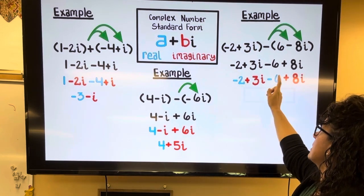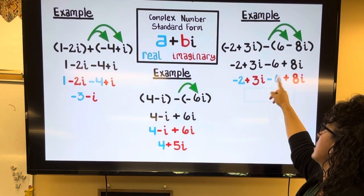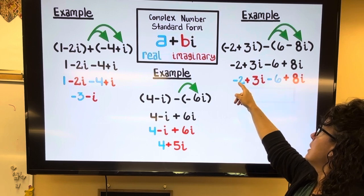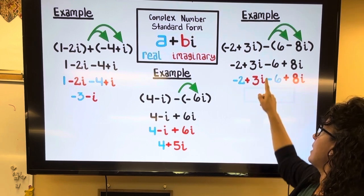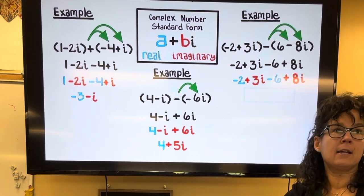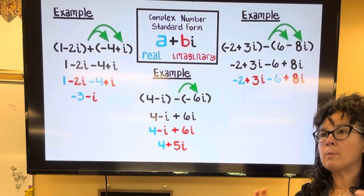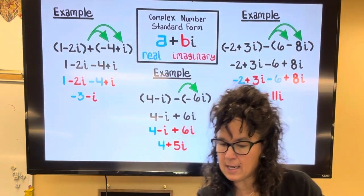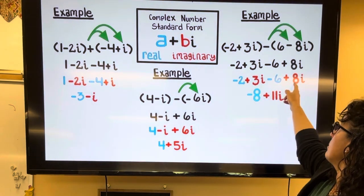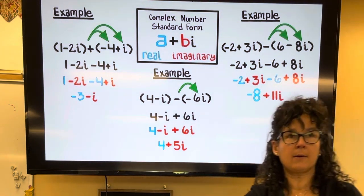All right, so -2 minus 6 is negative 8, and 3i and 8i is 11i. We want to put the number first, so I'm going to have -8 + 11i.